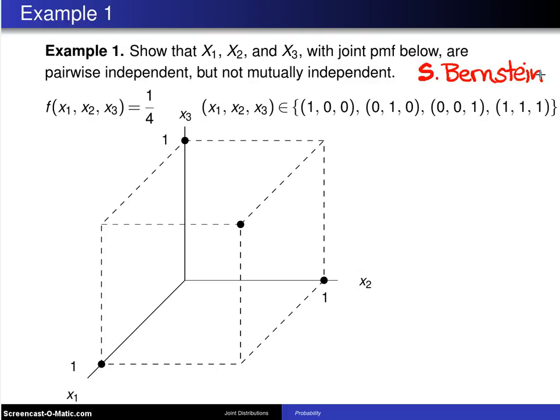Show that X1, X2, and X3 with a joint probability mass function given below are pairwise independent but not mutually independent.